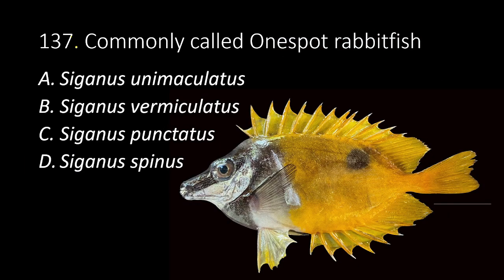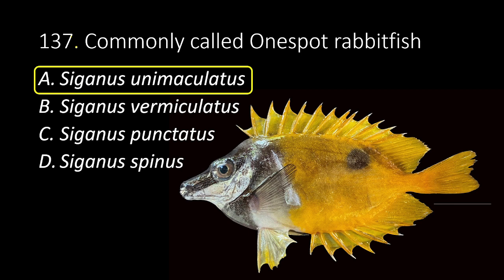137. Commonly called one-spot rabbit fish. A. Siganus unimaculatus. B. Siganus vermiculatus. C. Siganus punctatus. D. Siganus spinus. The answer is A, Siganus unimaculatus.